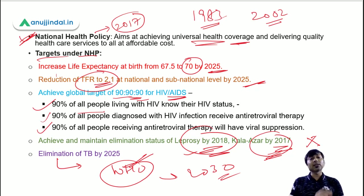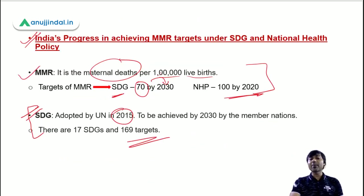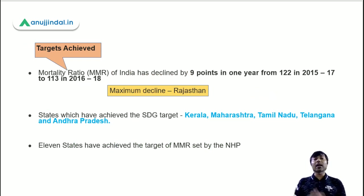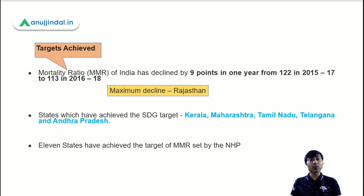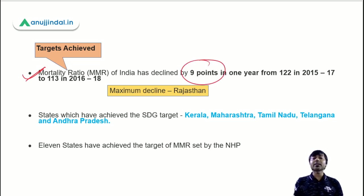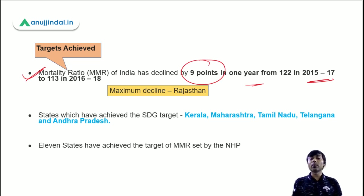This national health policy is very important, and the MMR and SDG targets are very important from an exam point of view. Regarding the recently announced targets achieved: India's MMR has declined by 9 points in one year — it was 122 in 2015-17, but in 2016-18 it has reduced to 113.